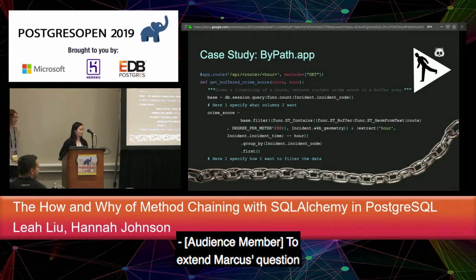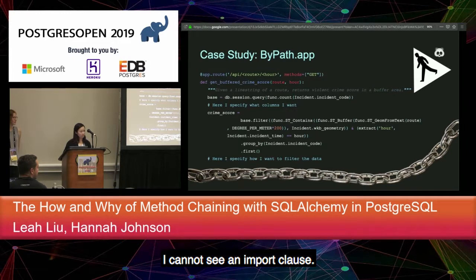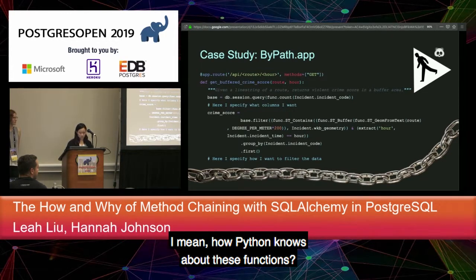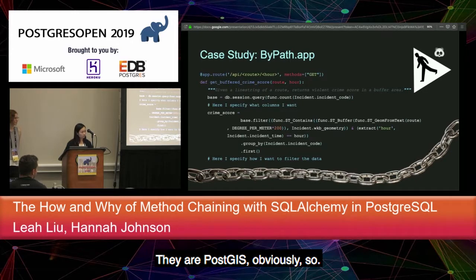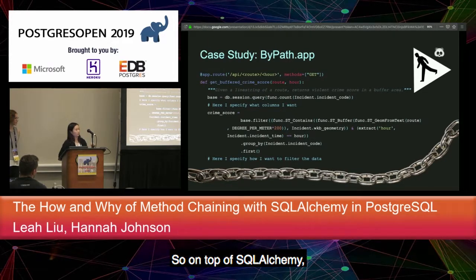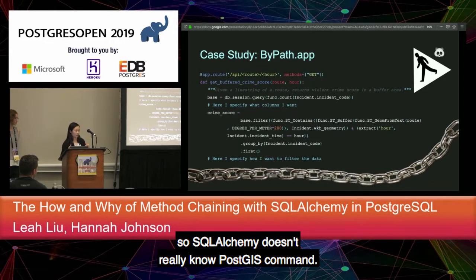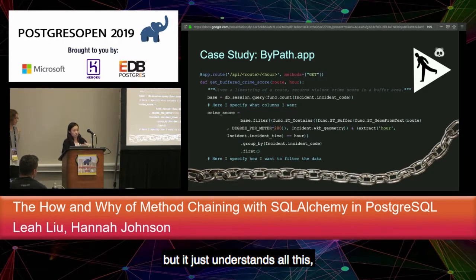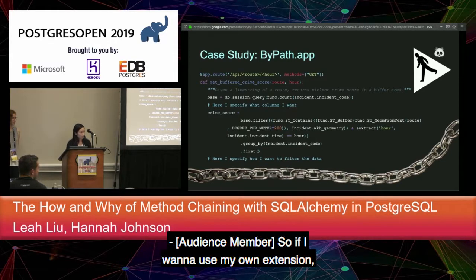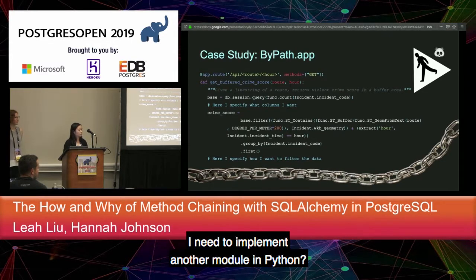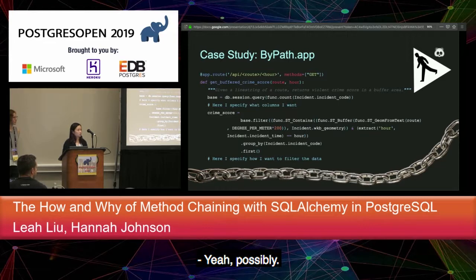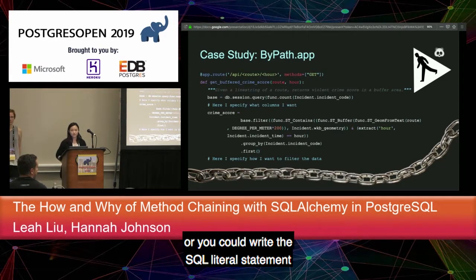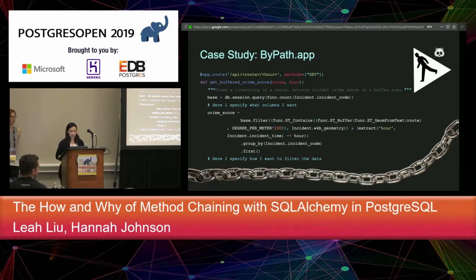A follow-up question: in the code slide, the import clause isn't visible — how does Python know about the PostGIS functions? The answer: on top of SQLAlchemy, GeoAlchemy is being used. SQLAlchemy itself doesn't know PostGIS commands, but GeoAlchemy does the same kind of thing as SQLAlchemy but is specifically catered to PostGIS. If someone wants to use their own extension, they'd need to implement another model in Python, or alternatively write a SQL literal statement and pass literal SQL directly.